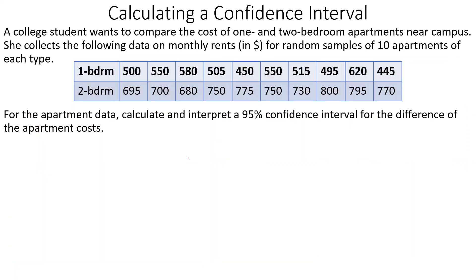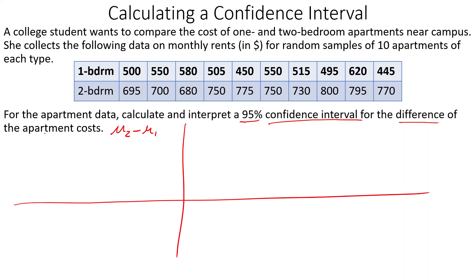Here's our first example: a college student wants to compare the cost of one- and two-bedroom apartments near campus. She collects data on monthly rents in dollars for random samples of 10 apartments of each type. We need to calculate and interpret a 95% confidence interval for the difference in apartment costs. The two-bedroom apartments appear mostly more expensive, so we'll do the mean for two-bedrooms minus the mean for one-bedrooms.